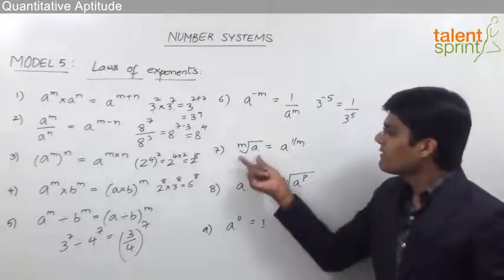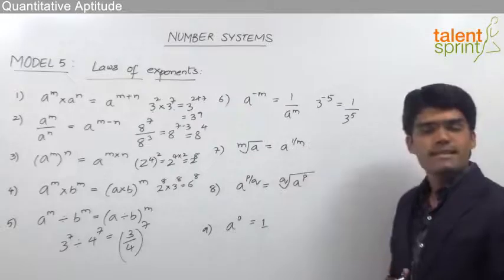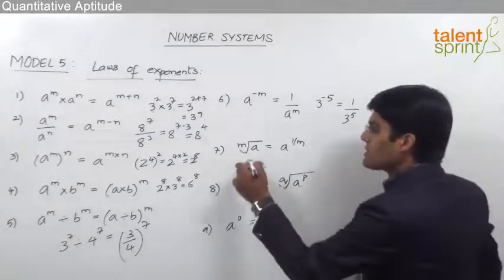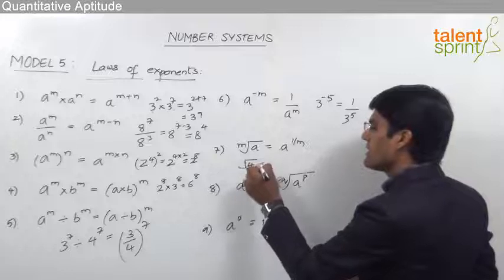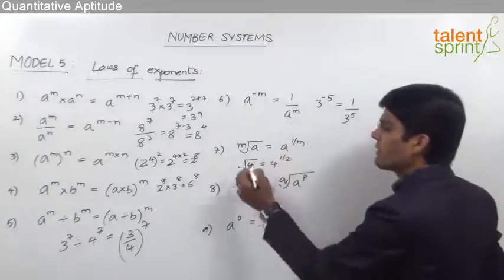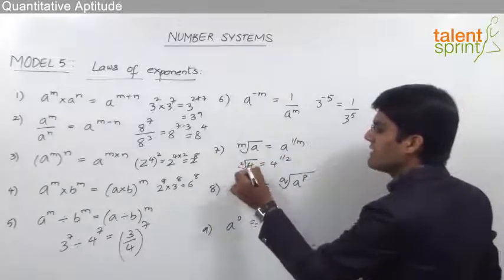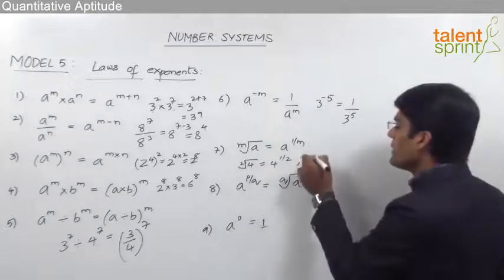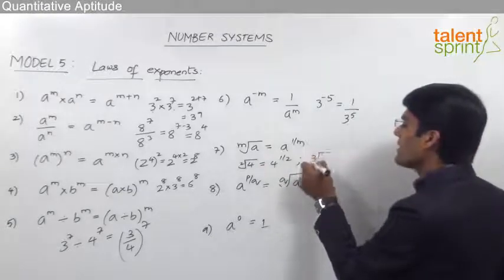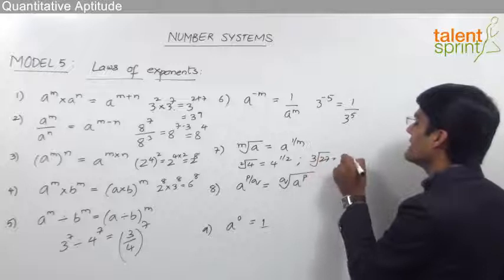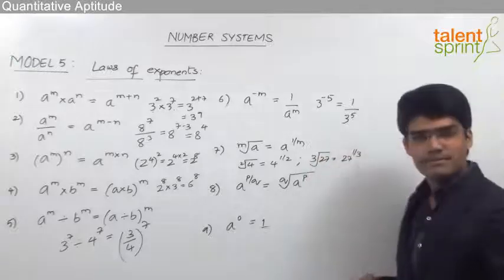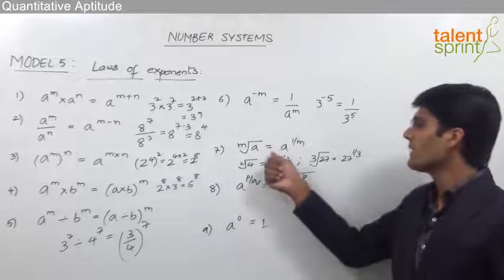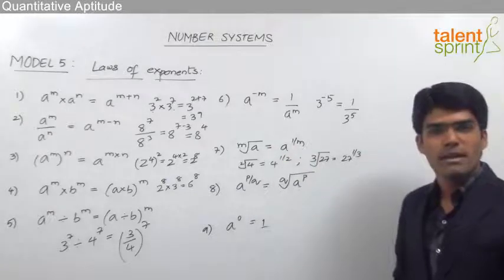The next rule is: the mth root of a can be taken as a power 1 by m. For example, the square root of 4 is nothing but 4 power 1 by 2, because this is the second root of 4. Similarly, the cube root of 27 can be taken as 27 power 1 by 3. So the mth root of a is equal to a power 1 by m.